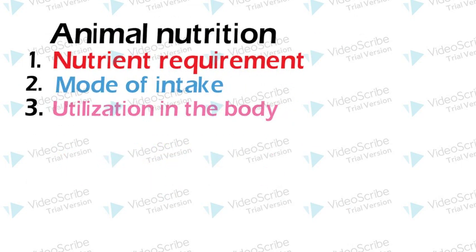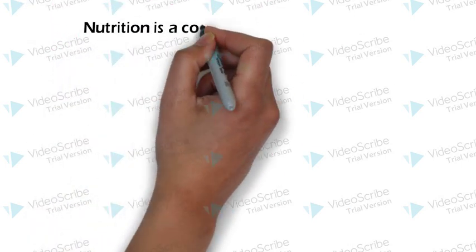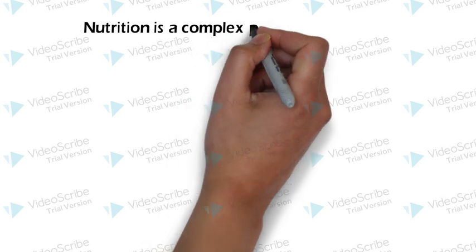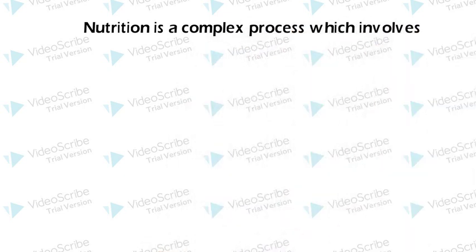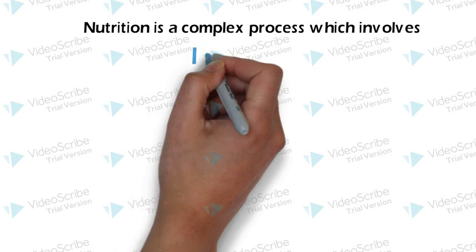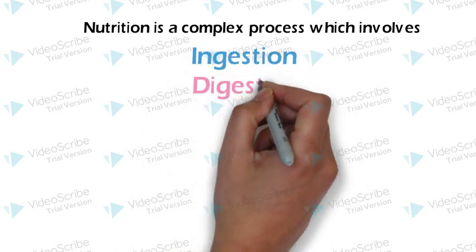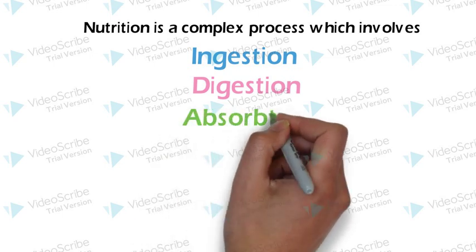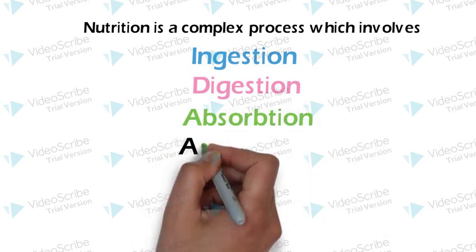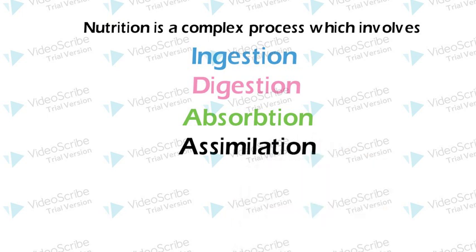First, we will discuss about the nutrient requirement. Nutrition is a complex process which involves ingestion, digestion, absorption, assimilation, and egestion.